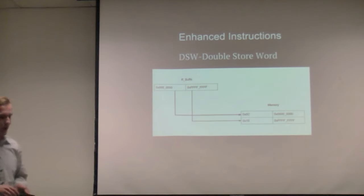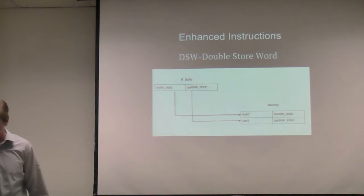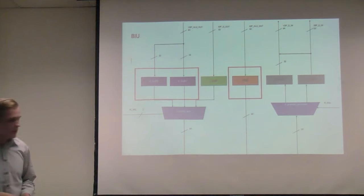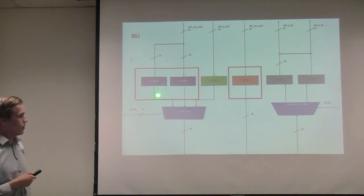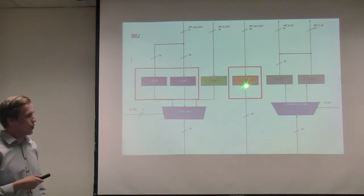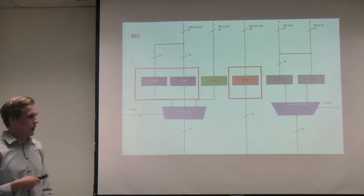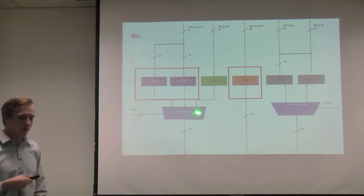Double store word is similar. The upper word goes into the first word of memory in big-endian format, followed by the second word into the next address. This uses the V-buffer registers coming straight from the vector ALU out. The address comes from the integer data path. The effective address is used to store these — first it stores V-buffer two, then V-buffer one.